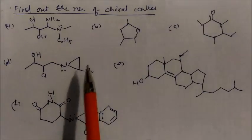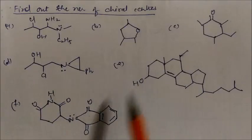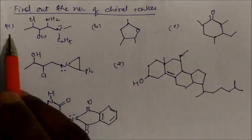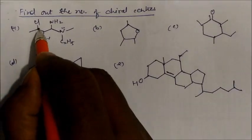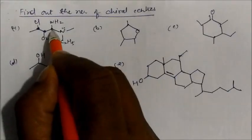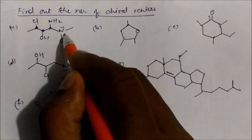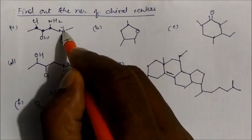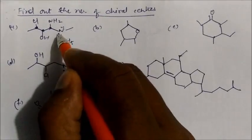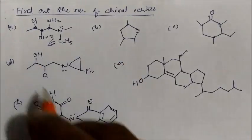Find out the number of chiral centers. There are five compound examples. Let us see the first one. These are the chiral centers here and here. Again, this is a chiral center. Nitrogen has four different groups — this is sp3 hybridization. But this nitrogen does not have a chiral center because it is present in an aliphatic chain. So there are three chiral centers in this molecule.